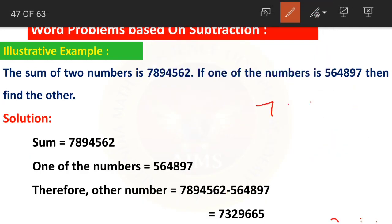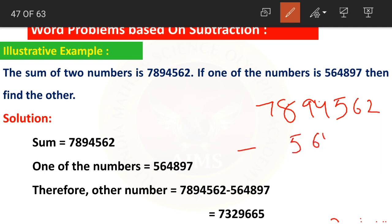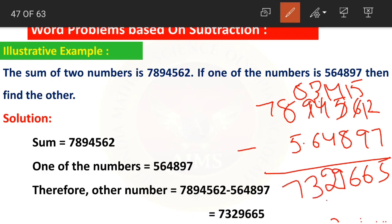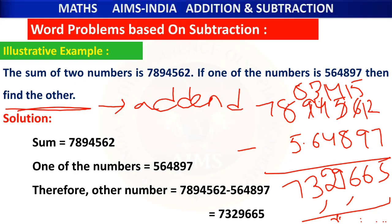...we borrow: 12 minus 7 is 5; borrow again — 15 minus 9 is 6; borrow — 14 minus 8 is 6; borrow — 13 minus 4 is 9; 8 minus 6 is 2; 8 minus 5 is 3; 7 as it is. Our answer is 73 lakhs 29,665. This is the other number — that is our other addend.